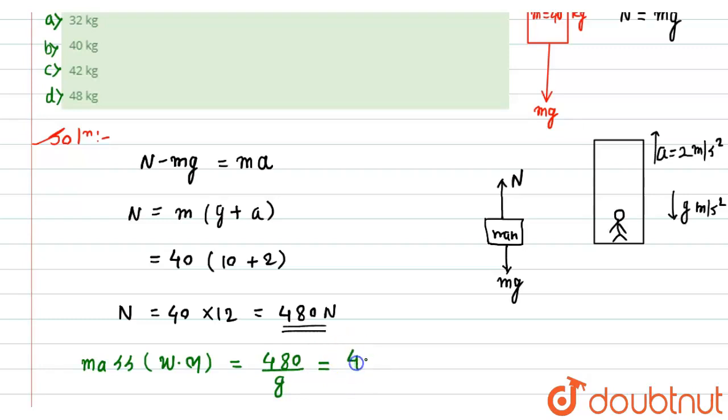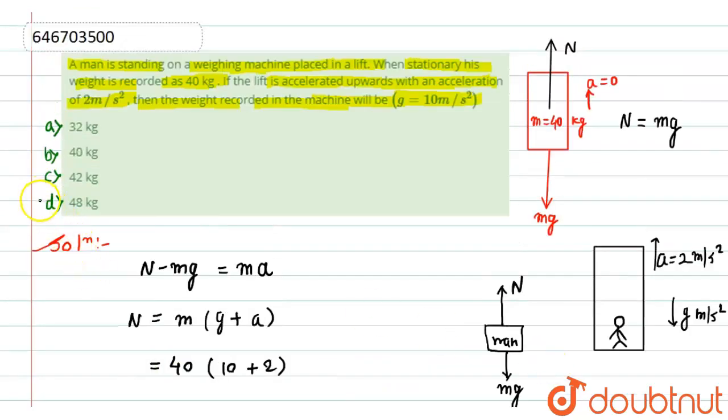it will become 480 divided by value of g. Zero zero will be cancelled out, so it will become 48 kg. And this will be our required answer. Now let's take the option, so option D will become correct here. So this is the required solution, thank you.